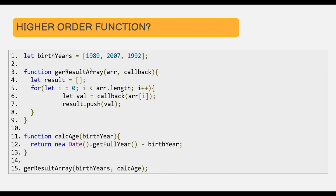In this example, the getResultArray function is a higher order function. When we call it, we pass the birthYears array and the calculateAge function as its parameters. So getResultArray is taking another function as its argument. When a function takes another function as its argument, that function is a higher order function.